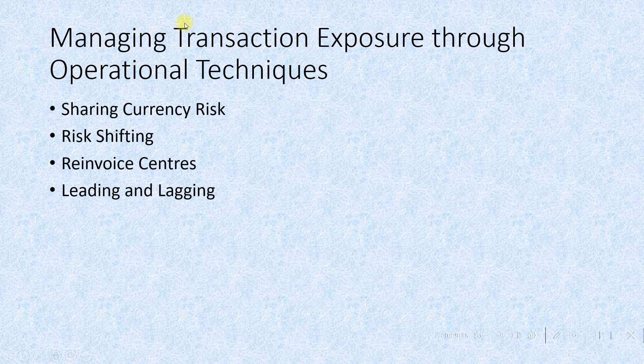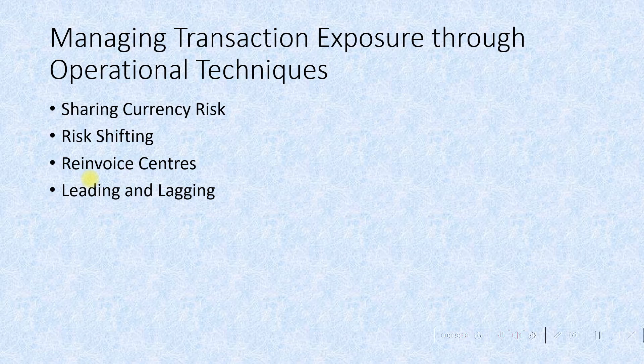Next is re-invoicing centers. In re-invoicing centers, a corporate subsidiary manages all transaction exposure from trade that emerges out of intra-company activities. The manufacturing center sells goods to a foreign distributor affiliated through a re-invoicing center. Affiliate transactions are carried out in the affiliate's local currency, and the re-invoicing center absorbs all the transaction exposure.